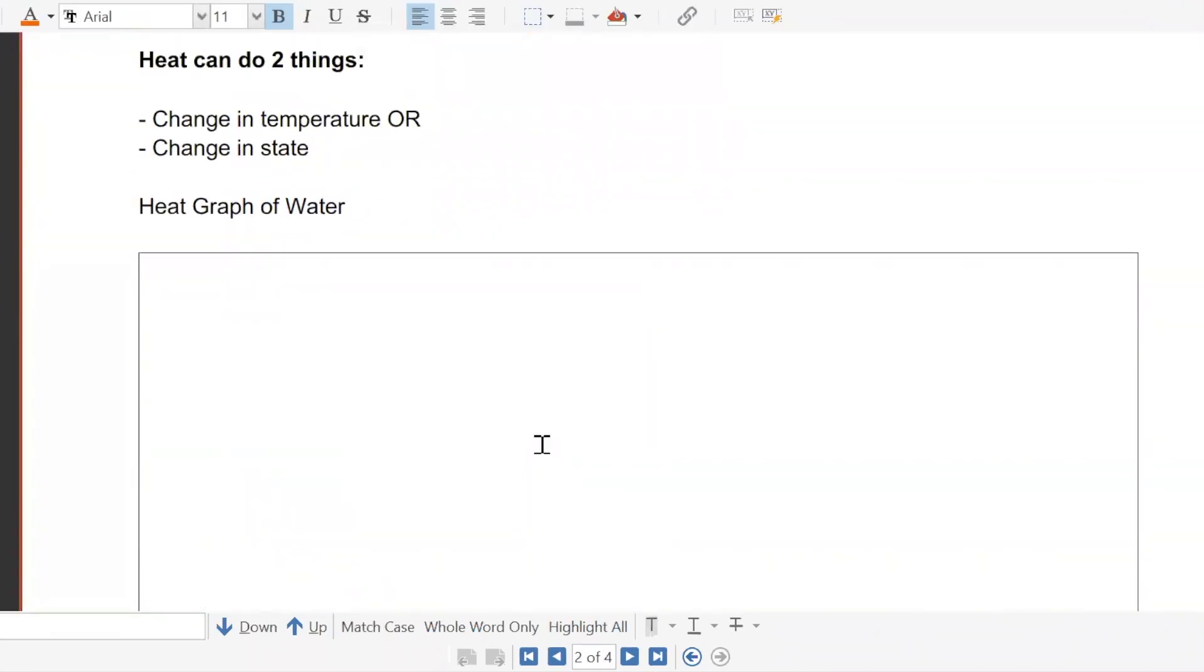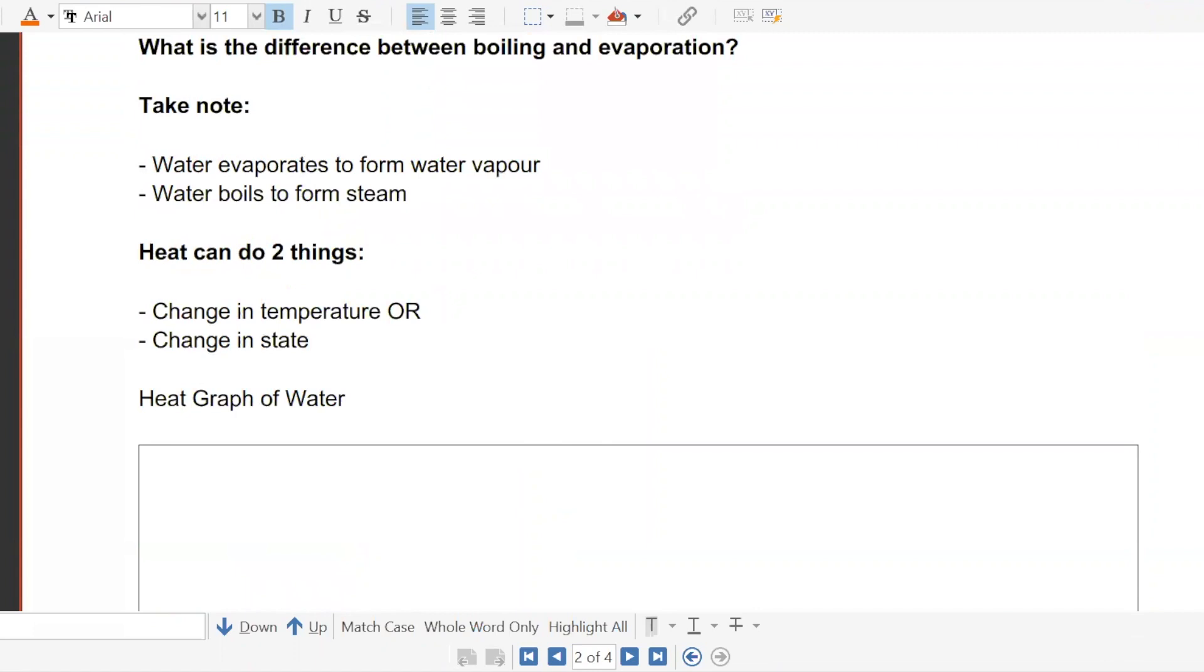So I want to draw this one, the heat graph of water. First, I want to highlight some things. Water evaporates to form water vapor. Evaporates form water vapor. Boiling will form steam. Then what's the difference between the two? Evaporation is my, evaporation and boiling, these are my heat processes. So heat processes.